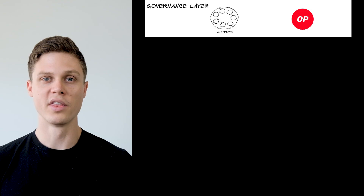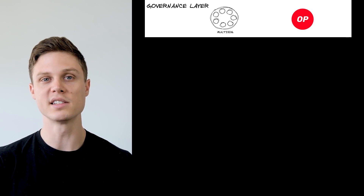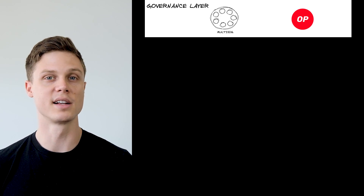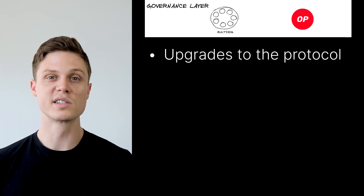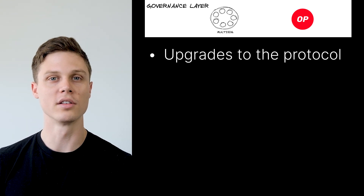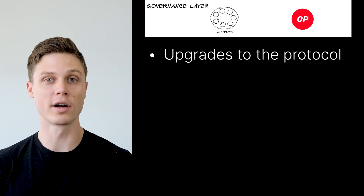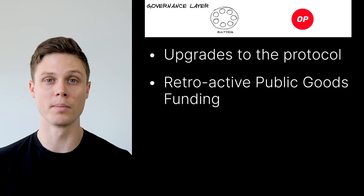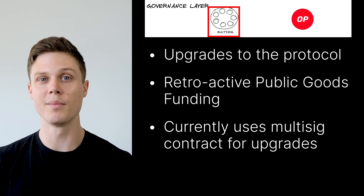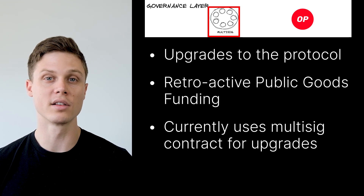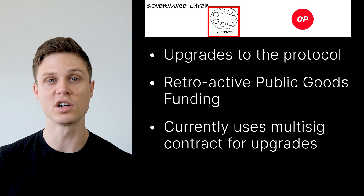Last but not least, we have the governance layer of the OP stack. The governance layer is probably the least well-defined of any of the existing layers, but it's also one of the most important. This is where upgrades to the protocol can be handled, but also where decisions like retroactive public goods funding and community grants are made. Currently, Optimism uses a multi-sig contract to handle upgrades to the network, in conjunction with votes from token holders. But this is rapidly progressing — Optimism actually has a really unique two-house governance system, which I made a whole video about if you want to learn more.